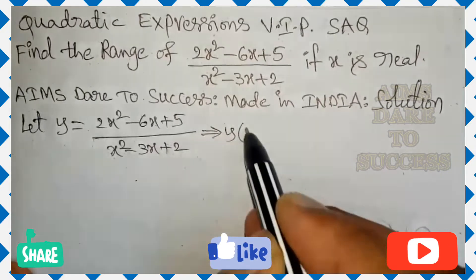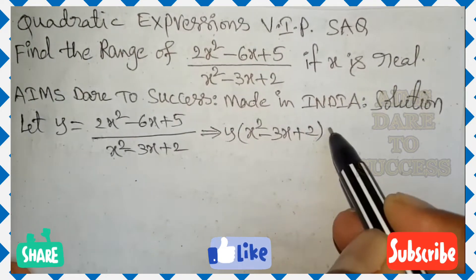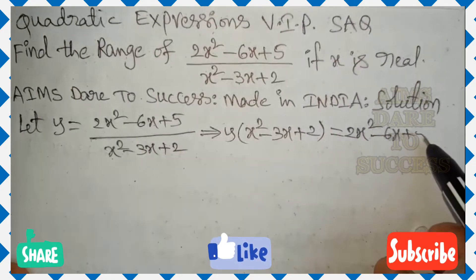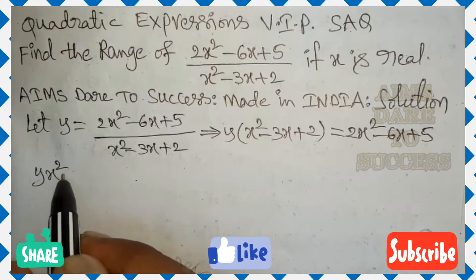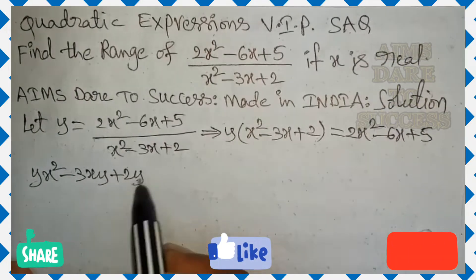cross multiplication. y into x square minus 3x plus 2 is equal to 2x square minus 6x plus 5. Y multiply inside. We get yx square minus 3xy plus 2y.